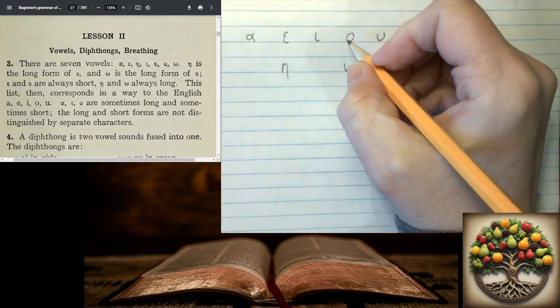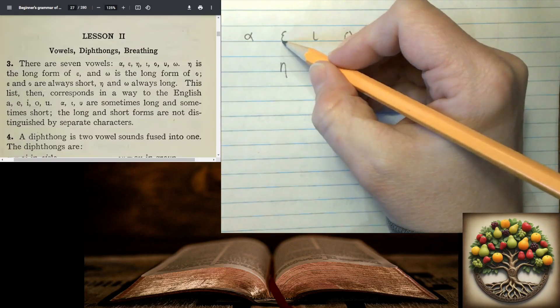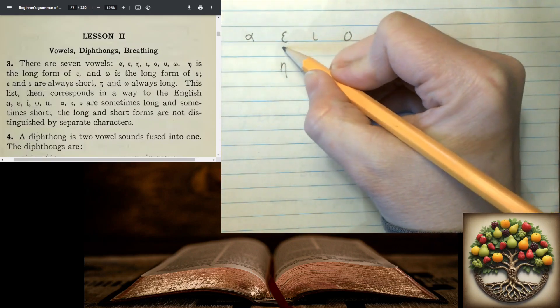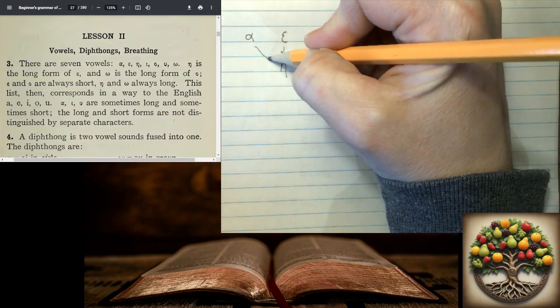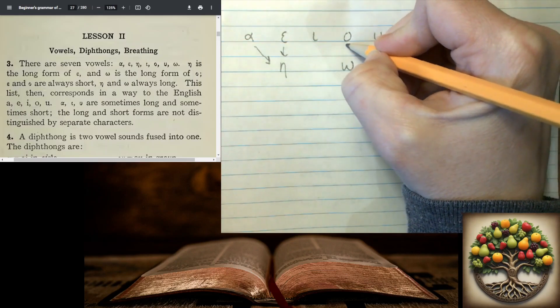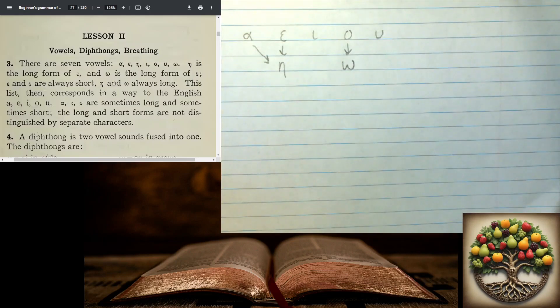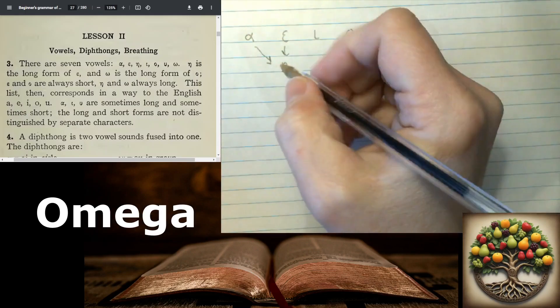Now I wrote it out like this because sometimes our epsilons are going to lengthen into an eta. The alphas will sometimes lengthen into an eta. And the omicron is going to be lengthening into an omega.